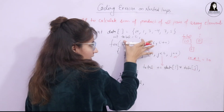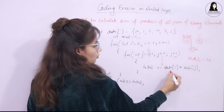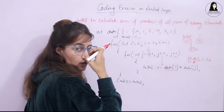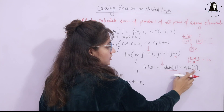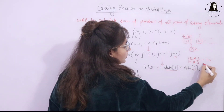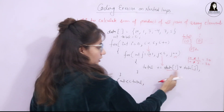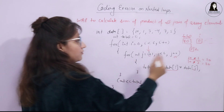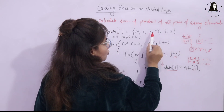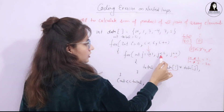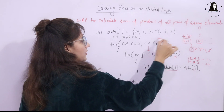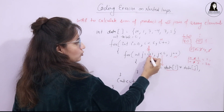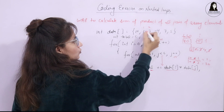After j++, j becomes 2. data[0] = 10 (i is still 0), data[2] = 3, so product = 30. Total becomes 40. j continues through 3, 4, 5. Once j becomes 6, we exit the inner loop. Now i becomes 1, and j restarts at i+1 = 2. So the pair is now (1, 3) — exactly what we want, not (1, 10). That's why j is initialized to i+1.